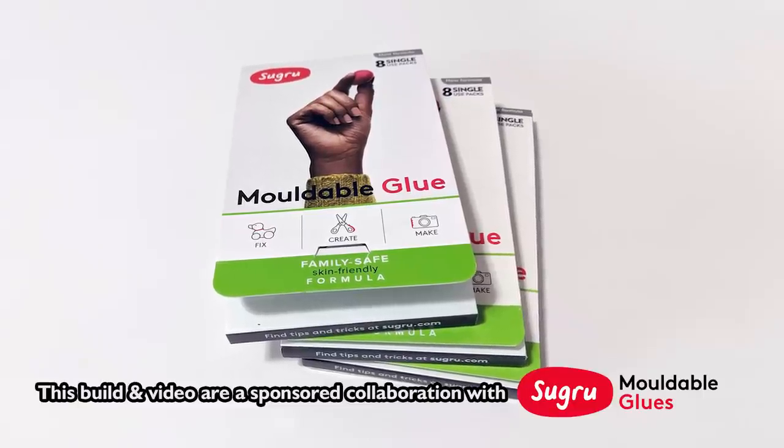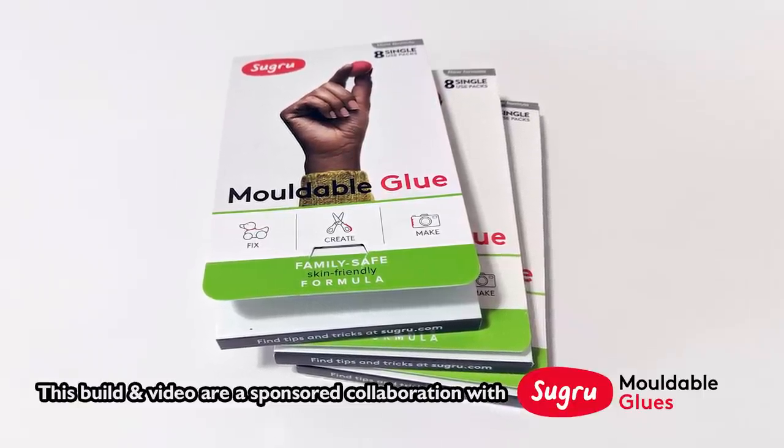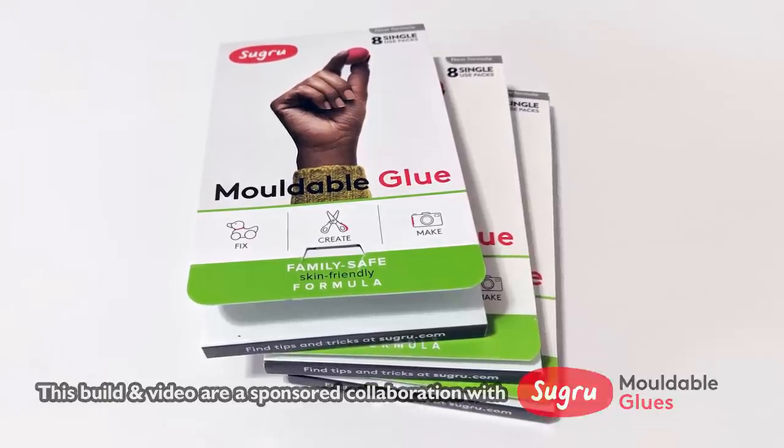Sugru is the world's first moldable glue. It sticks to many materials like glass, ceramic, wood, metal, and most plastics.